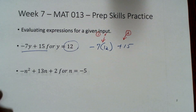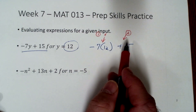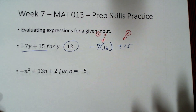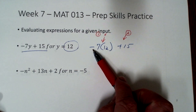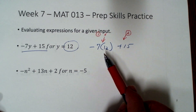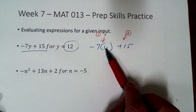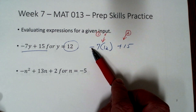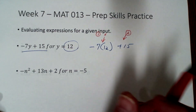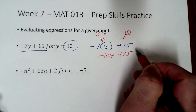Order of operations: we have multiplication first, then addition. When things are next to each other, it means multiply. We multiply negative 7 times 12. Anytime we multiply with signed numbers, if they're different signs, the answer is negative. So 7 times 12 is 84, but negative 7 times positive 12 gives us negative 84 plus 15.